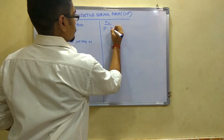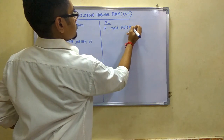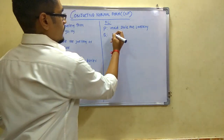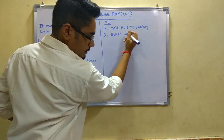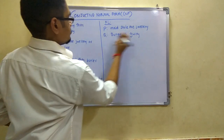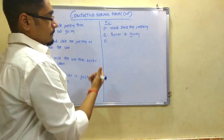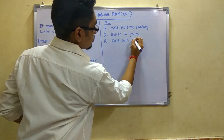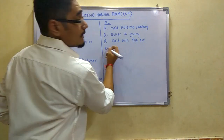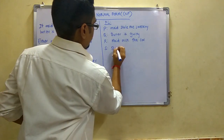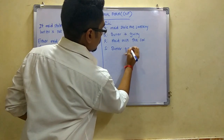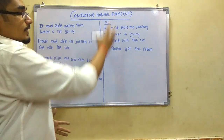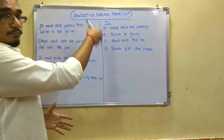For the propositional logic, I assign variables as follows: P = 'maid stole the jewelry'; Q = 'butler is guilty'; R = 'maid milked the cow'; S = 'butler got the cream.' These four variables represent the four statements. We will convert these into CNF and see how to resolve them.